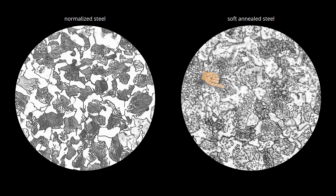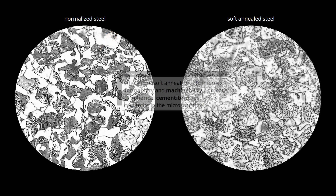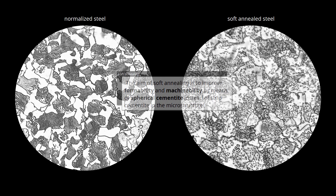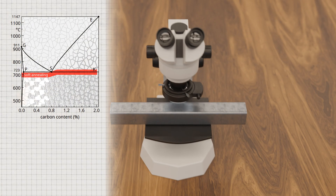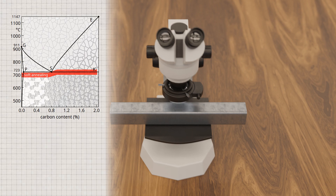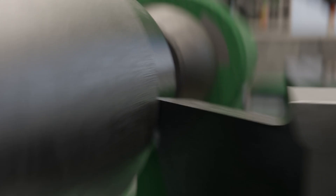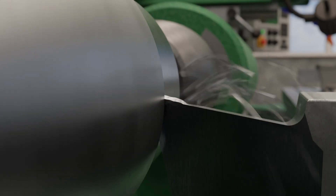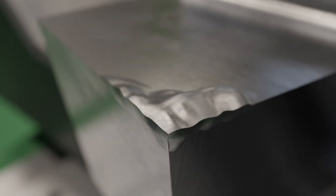The image shows a soft annealed steel C45. You can see the spherical cementite that have developed from the strip cementite. The aim of soft annealing is to improve formability and machinability by means of spherical cementite instead of strip cementite in the microstructure. Hypoeutectoid steels with a carbon content of less than about 0.3% are usually not soft annealed as they are relatively soft anyway. Although these steels already have good formability, machinability is poor due to the tendency to smear — the soft material literally sticks to the cutting edge of the tool due to the high temperatures during machining, resulting in so-called built-up edges.